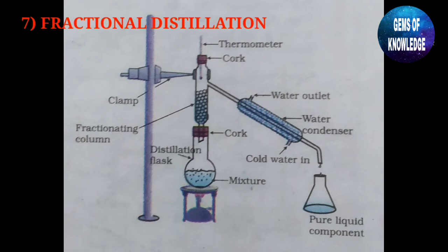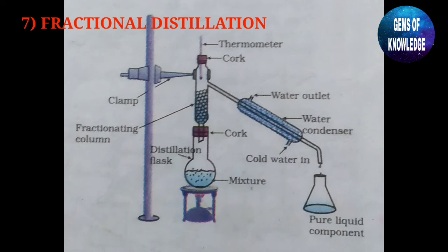The main difference between simple distillation and fractional distillation is the fractionating column, which is present in fractional distillation but not in simple distillation. The fractionating column contains small bead-like structures that help cool the vapors. Fractional distillation is used when the difference in boiling points of the miscible liquids is less than 25 Kelvin; otherwise simple distillation is used. Apart from this difference, the overall process is relatively the same.